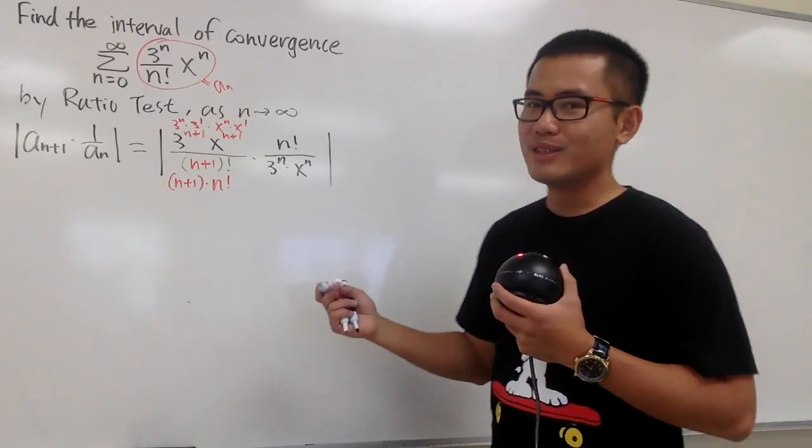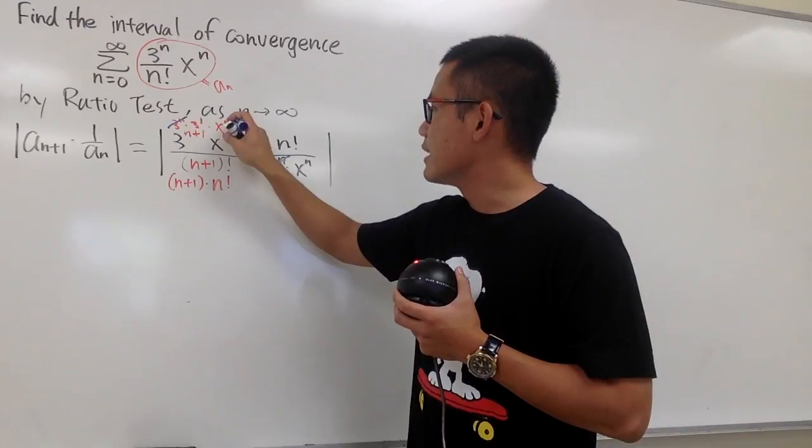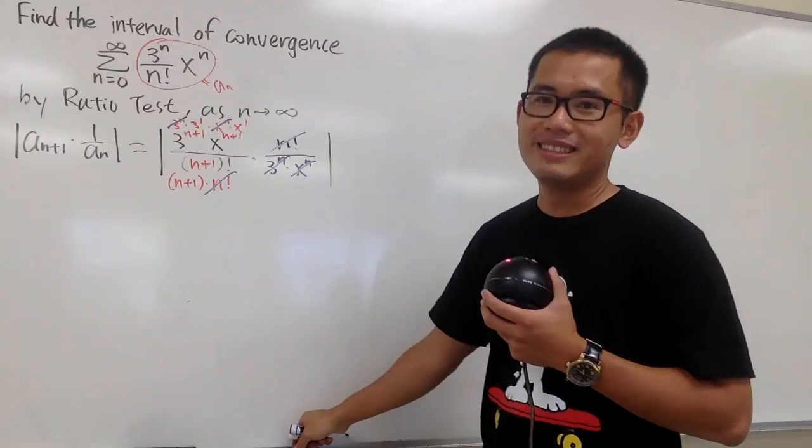Okay, now, cancellation. This is the best part, isn't it? 3^n cancels out with this, x^n cancels out with that, n factorial, n factorial. So nice, isn't it?